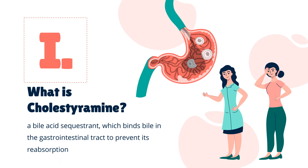What is cholestyramine? Cholestyramine is a bile acid sequestrant which binds bile in the gastrointestinal tract to prevent its reabsorption. It is a strong ion exchange resin, which means it can exchange its chloride anions with anionic bile acids in the gastrointestinal tract and bind them strongly in the resin matrix.